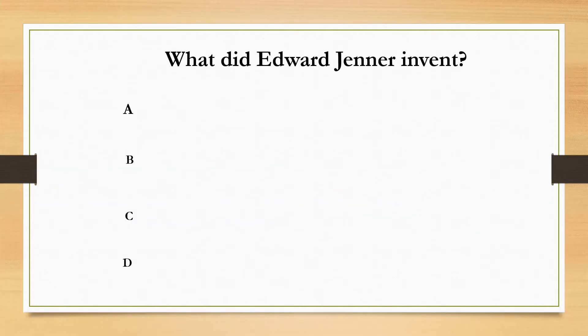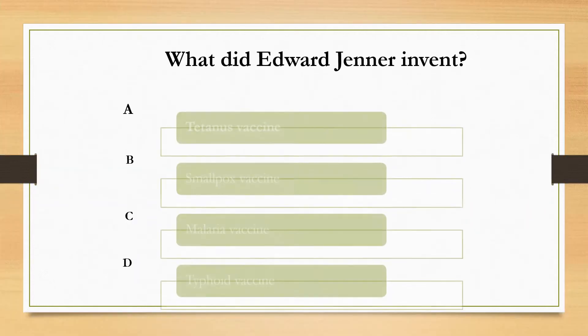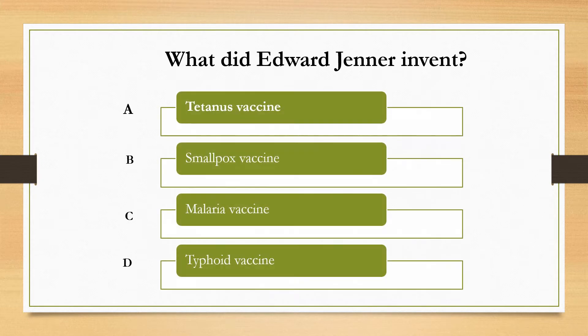What did Edward Jenner invent? There are four options. A. Tetanus vaccine. B. Smallpox vaccine. C. Malaria vaccine. D. Typhoid vaccine.